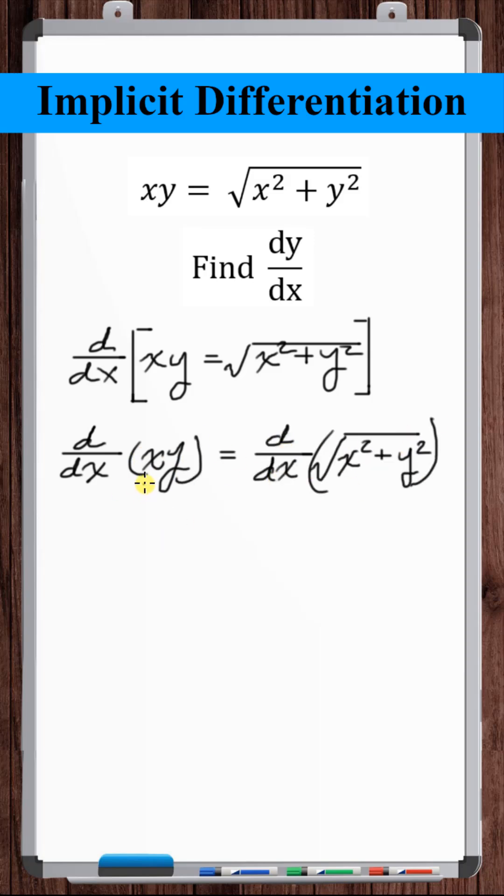On the left, we need to use the product rule. We have two functions of x. The derivative of the first, one, times the second y, plus the derivative of the second, dy/dx, times the first x.